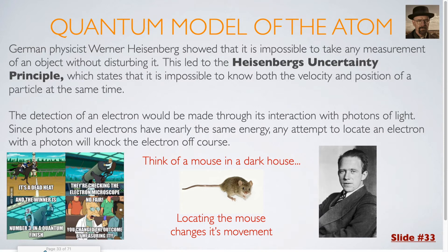German physicist Werner Heisenberg showed that it is impossible to take any measurement of an object without disturbing it. This led to Heisenberg's uncertainty principle, which states that it is impossible to know both the velocity and position of a particle at the same time. The detection of an electron would be made through its interaction with photons of light. Since photons and electrons have nearly the same energy, any attempt to locate an electron with a photon will knock the electron off of its original course.